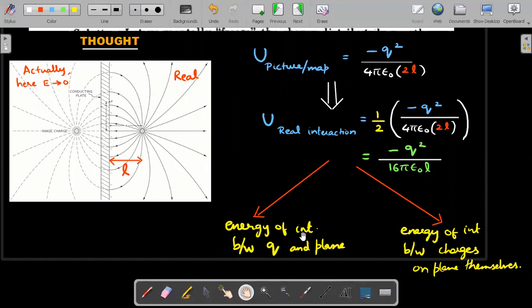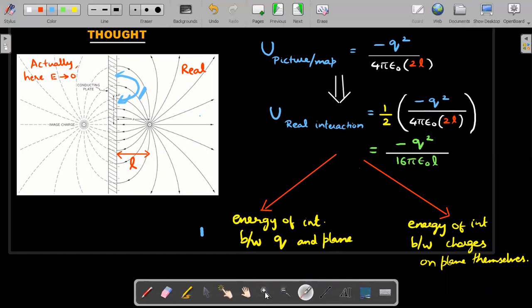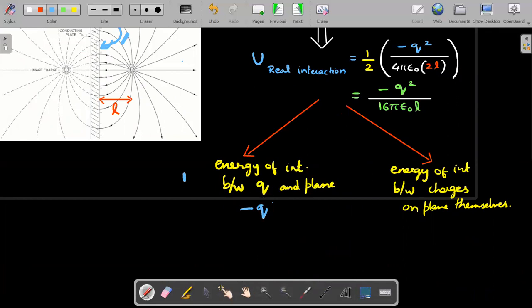There's a reason this answer is correct and not 16πε₀L. The two questions are actually different. If you observe closely, he asked for energy of interaction between the charge and the charges induced on the plane. The field map energy contains two parts: energy of interaction between q and the plane charges, and energy of interaction between the charges on the plane themselves - the self-interaction term.